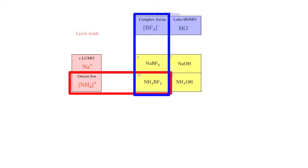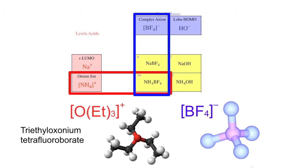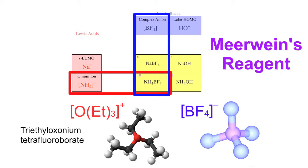Onium ions with complex anion Lewis bases are an interesting group because the complex anion Lewis bases are often exceedingly poor nucleophiles. This enables them to act as counter ions to very reactive entities such as the triethyl oxonium tetrafluoroborate. This is a powerful alkylating agent producing Meerwein's reagent.